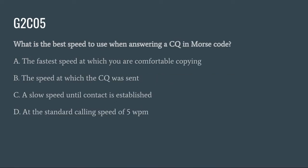G2C05: What is the best speed to use when answering a CQ in Morse code? A. The fastest speed at which you are comfortable copying. B. The speed at which the CQ was sent. C. A slow speed until contact is established. Or D. At the standard calling speed of 5 words per minute. The correct answer is B: the speed at which the CQ was sent.